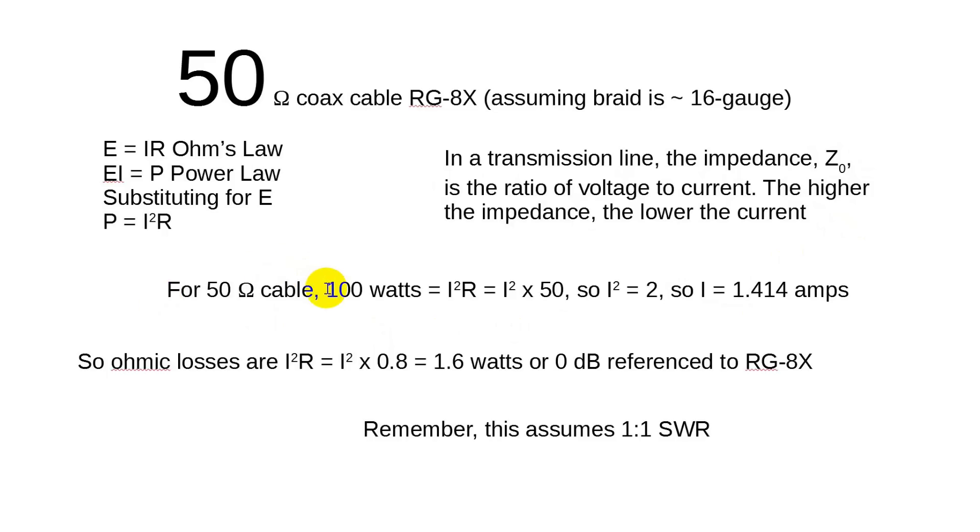So for a 50-ohm cable like coax, 100 watts is I²R or I² times 50 for the characteristic impedance. So I² equals 2, so I is 1.414 amps in the coax. For most conditions, you can use RG8 coax for that without an issue. But the ohmic losses are I²R. It's I²R times 0.8, which is the resistance per 100 feet and then circle back another 100 feet. That's 1.6 watts loss in the cable just due to heating the cable.